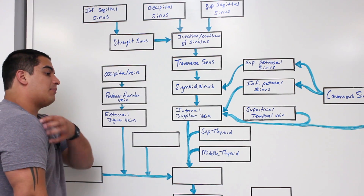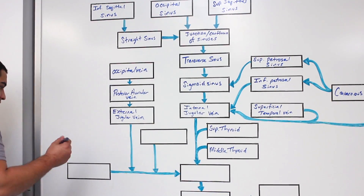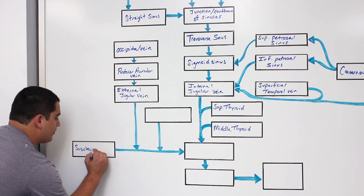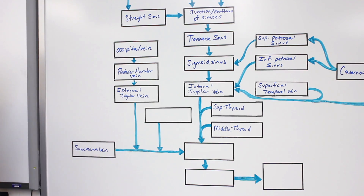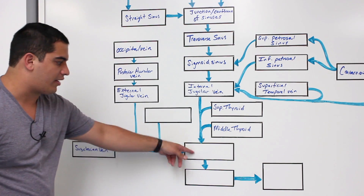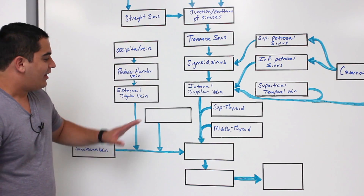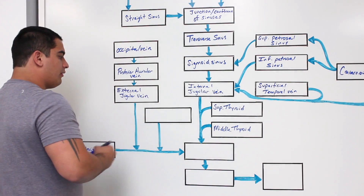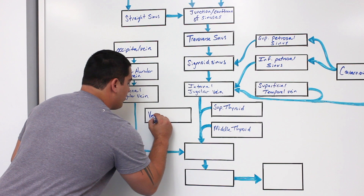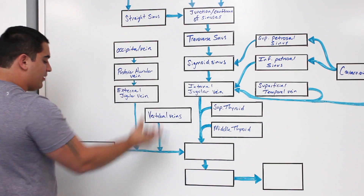Another structure brings blood from the upper limbs and other structures — called the subclavian vein, which runs right underneath the clavicle. As the subclavian vein moves to join another structure, it picks up blood from the external jugular vein and also from the vertebral veins, which drain parts of the vertebral basilar system. The vertebral veins empty into the subclavian vein.